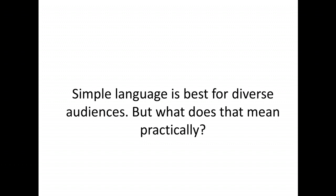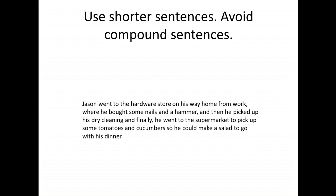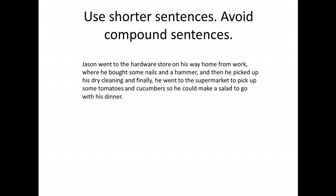We also find that simple language is best for diverse audiences. One thing it means is to use shorter sentences and to avoid compound sentences. For example, here is a very long sentence: 'Jason went to the hardware store on his way home from work where he bought some nails and a hammer, and then he picked up his dry cleaning, and finally he went to the supermarket to pick up some tomatoes and cucumbers so he could make a salad to go with his dinner.' Grammatically there's nothing wrong with it, but it is very challenging to read for anyone, especially someone approaching English as a second, third, or fourth language. So we can revise that.